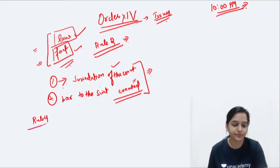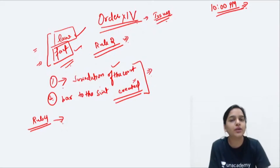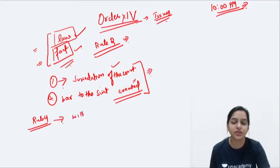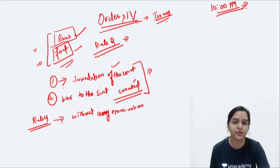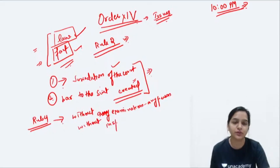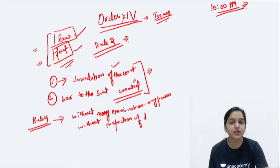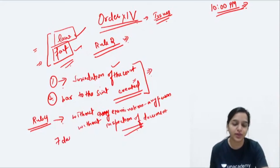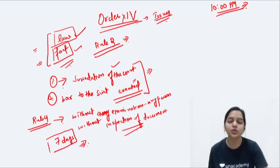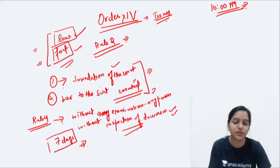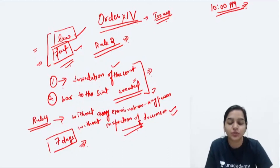Then Rule 4 is important. Agar court ko lagta hai ki issues correctly frame nahi kar sakti without the examination of any person, ya without the inspection of any document jo suit mein produce nahi kiya gaya hai ya us person ko suit mein examine nahi kiya gaya hai — toh court adjourn kar degi proceedings. Court adjournment 7 din se zyada nahi kar sakti — a day not later than 7 days. Court un dinon mein essay person ko compel kar sakti hai attendance ke liye, ya document ki inspection/production ke liye. Court examine kar sakti hai witnesses aur documents before framing of issues.